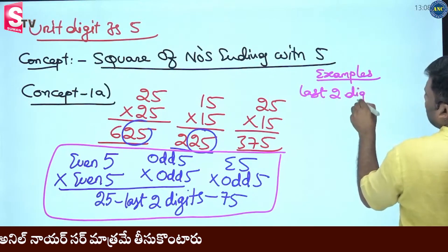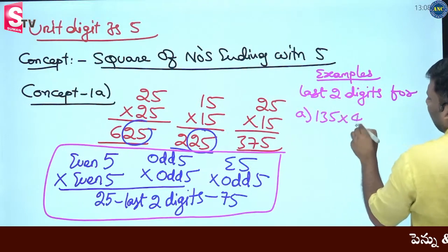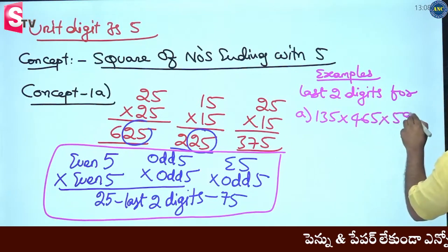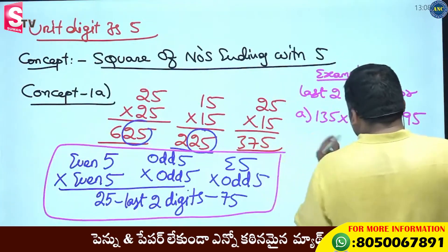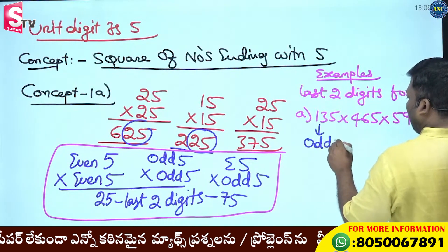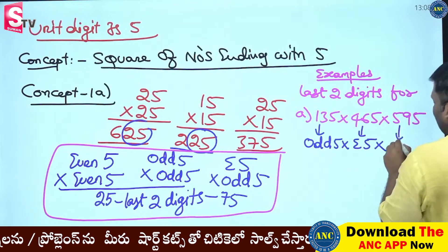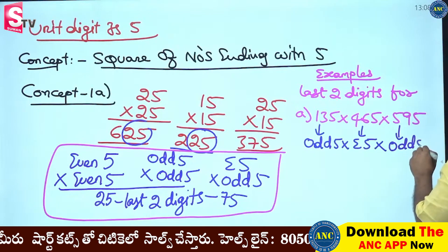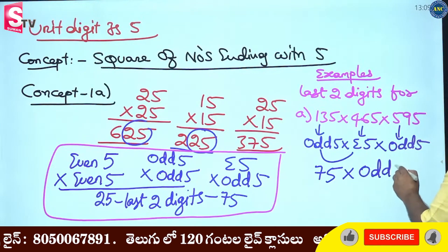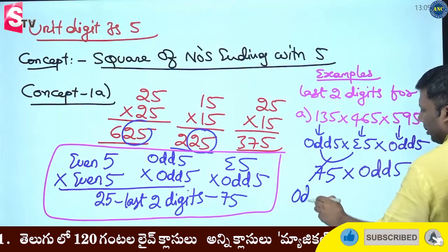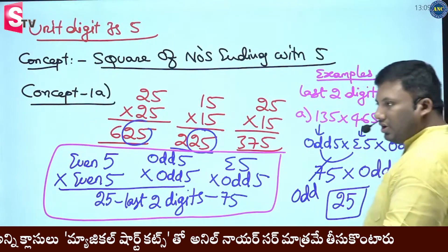Examples: find the last two digits. First one: 135 into 465 into 595. All three numbers end with 5. 13 is odd, so 135 is odd ending with 5. 46 is even, so 465 is even ending with 5. 59 is odd, so 595 is odd ending with 5. Odd 5 into even 5 gives last two digits 75. Then 75 into odd 5: odd 5 into odd 5 gives last two digits 25.